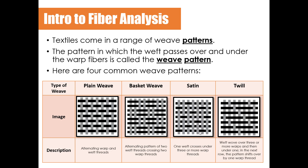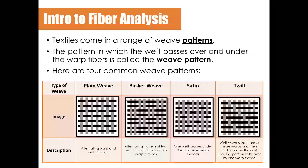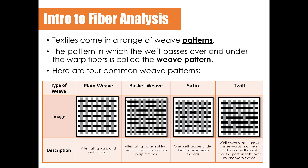Textiles come in a range of weave patterns. For this class, you need to be able to identify four: plain weave, basket weave, satin, and twill. The pattern in which the weft passes over and under the warp fibers is known as the weave pattern. Make sure you can identify these weave patterns by image and by description, as they may appear on a test, quiz, or worksheet.